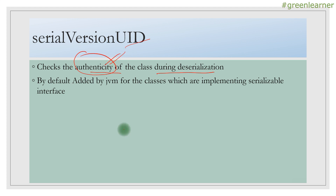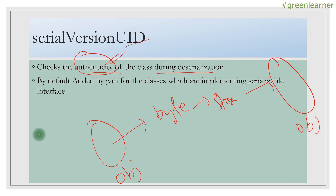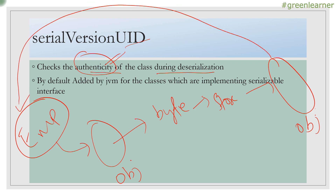Here comes the key concept. You had an object, you serialized it, converted it into bytes and stored it. Then you again converted it back into the object. This object was associated with a single class. So you created the object from it, and when you are recreating the object, it is again taking reference from the class from where you originally created the object.